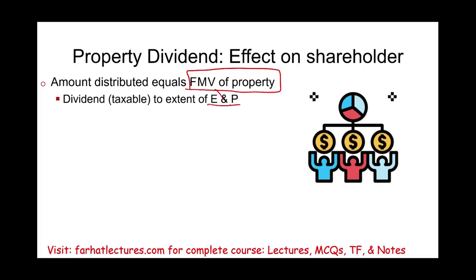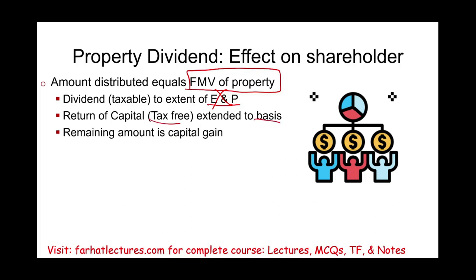If the company doesn't have earnings and profit and they make the distribution, it's a return of capital, which is tax-free to the extent of your basis. If you don't have any basis, any amount received in excess of the basis is capital gain. It doesn't matter whether the dividend is cash or something other than cash — we treat it the same way for the order of distribution.